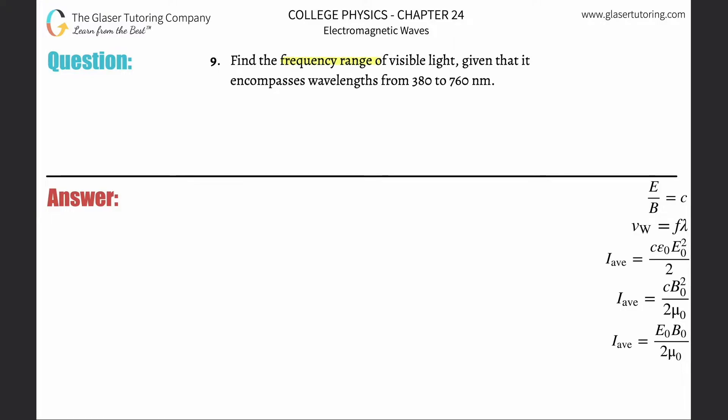Number nine, find the frequency range of visible light given that it encompasses wavelengths from 380 to 760 nanometers.